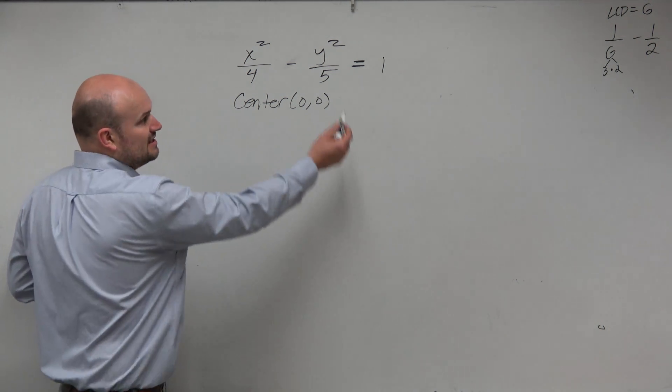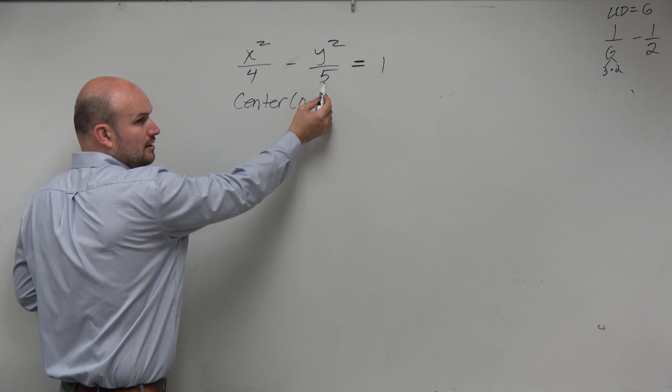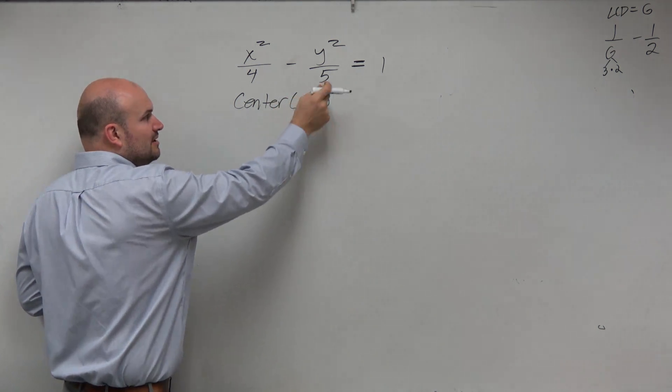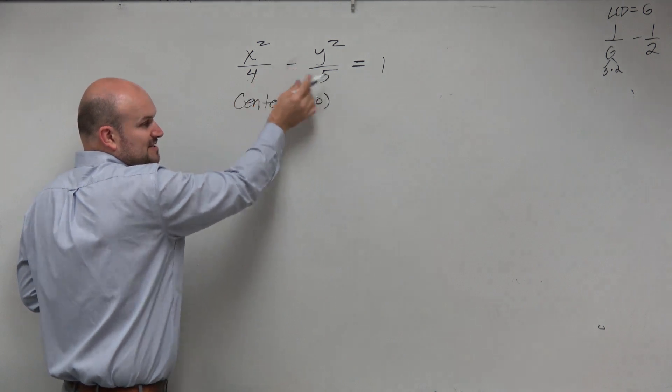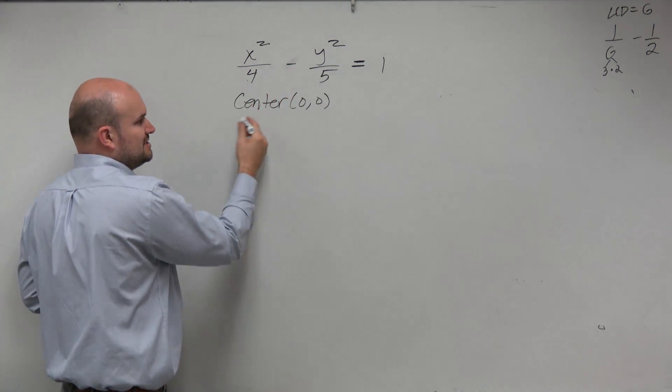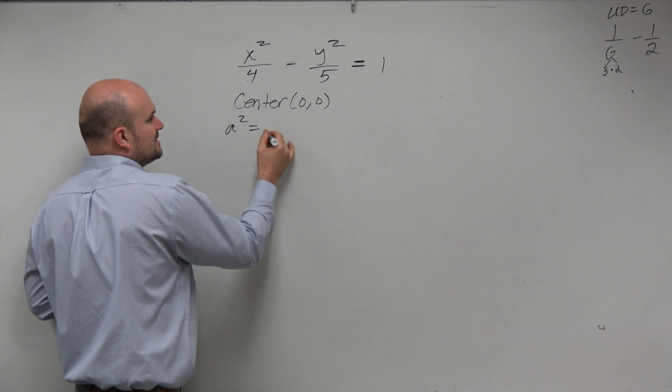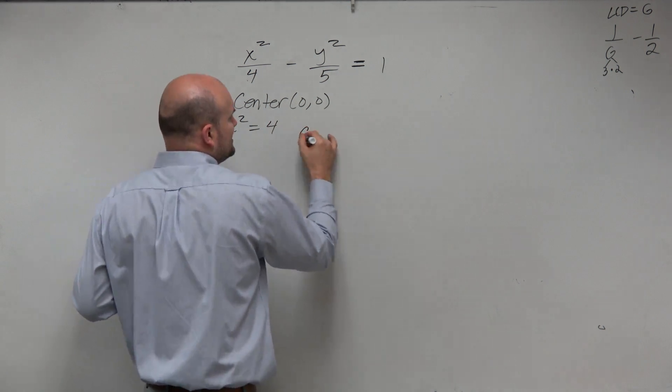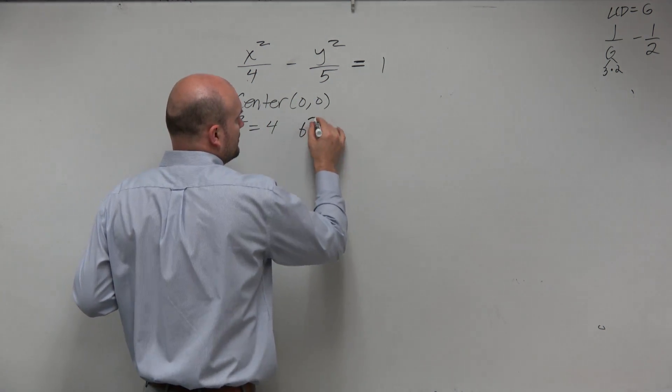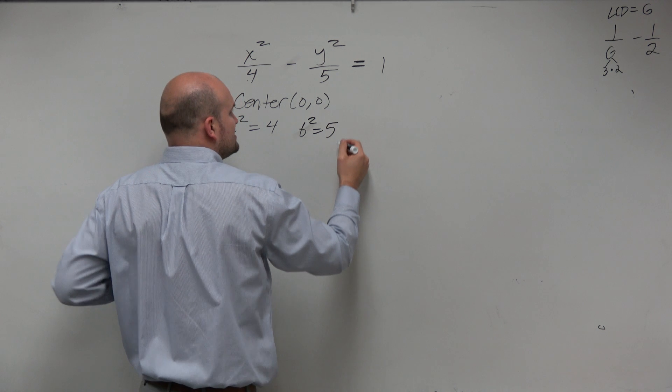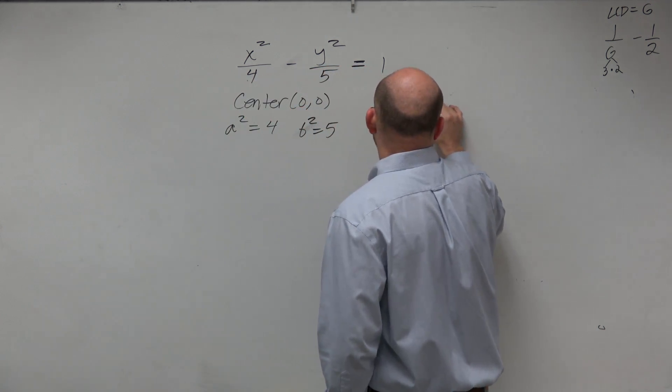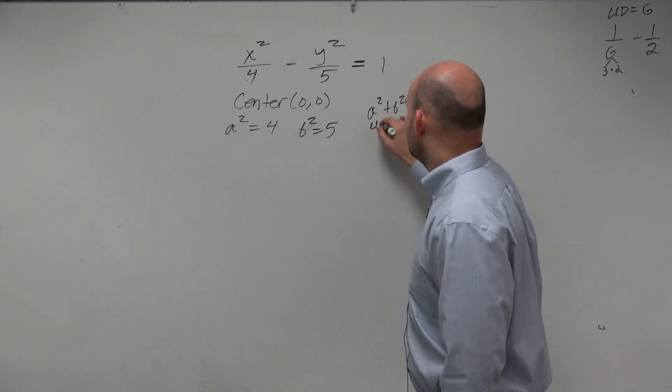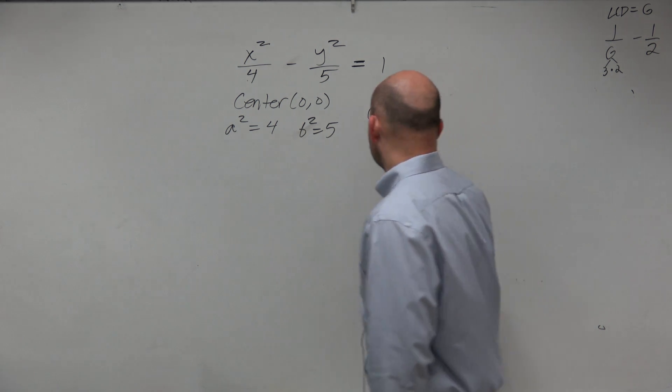So remember, guys, is a squared equal to 5? No, because remember, it's always a squared minus b squared. So a squared is going to be our positive value there. So a squared is equal to 4. b squared, I'm still going to write in b squared, is equal to 5. Because if I want to find c squared, remember, a squared plus b squared equals c squared. So a squared is 4 plus 5 equals c squared.